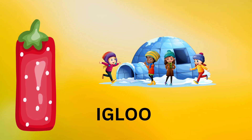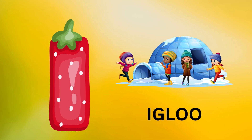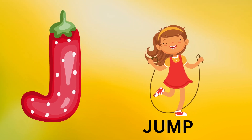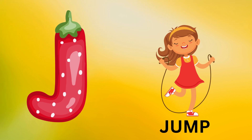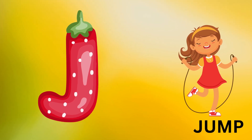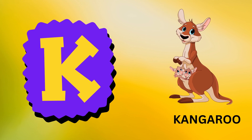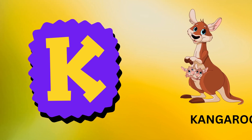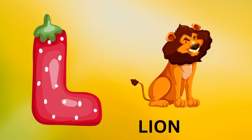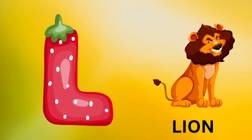I is for igloo, i-i-igloo. J is for jump, j-j-jump. K is for kangaroo, k-k-kangaroo. L is for lion, l-l-lion.